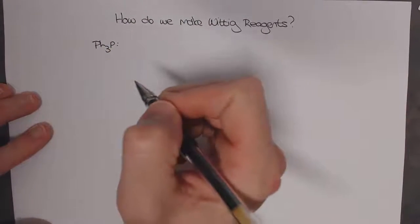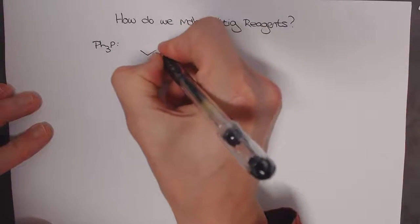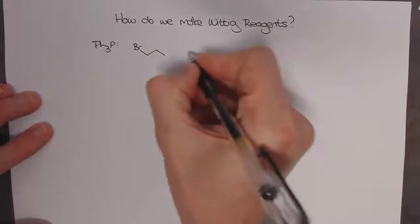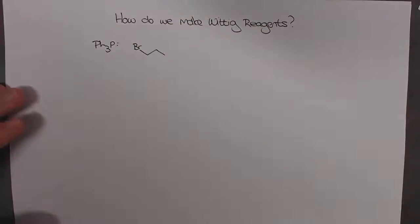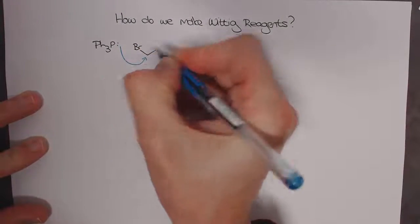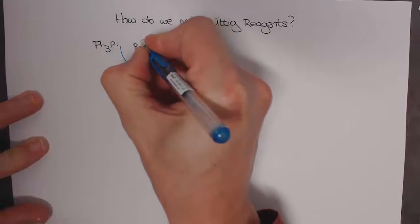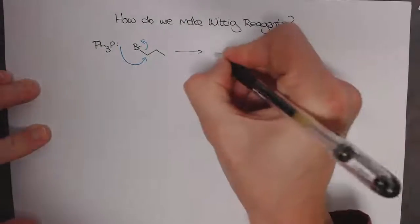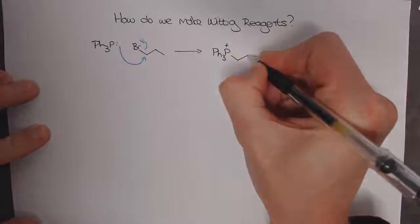The basic Wittig reagent is made using triphenylphosphine, which is very easy to obtain, and then just any alkyl halide. In this case I'll take propyl bromide. The triphenylphosphine is a good nucleophile and so the lone pair of electrons can do an SN2 reaction with alkyl halides kicking out the bromine. And our product is a Wittig salt.